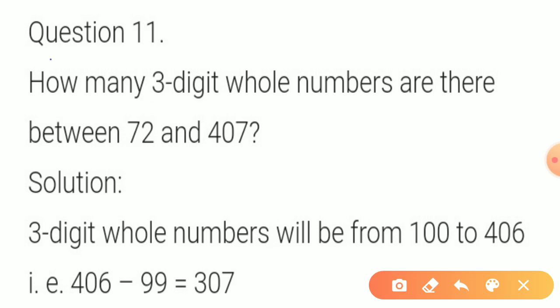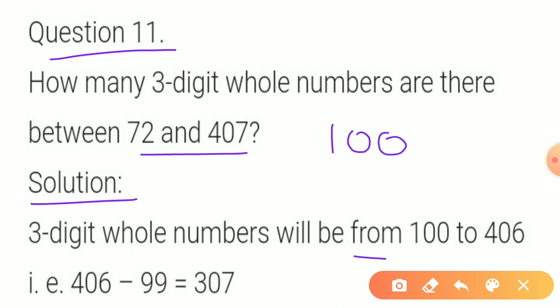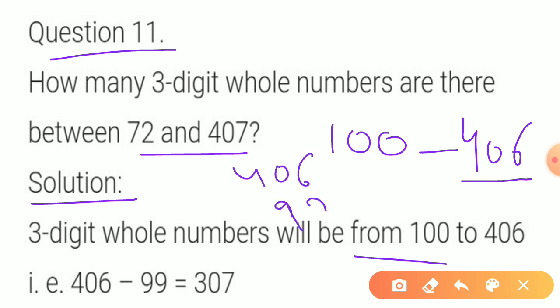Question 11: How many 3-digit whole numbers are there between 72 and 407? Three-digit whole numbers start from 100. We look from 100 up to 406. Subtract 99 (the total count of 1- and 2-digit numbers) from 406, which gives 307. These are all the 3-digit whole numbers up to 406.